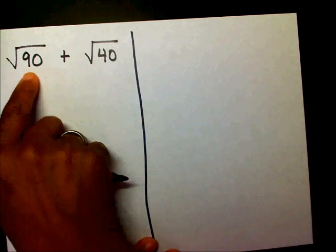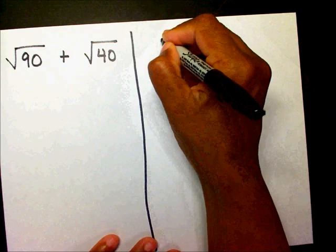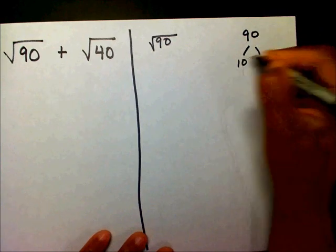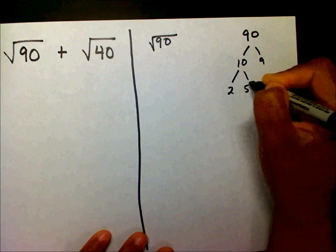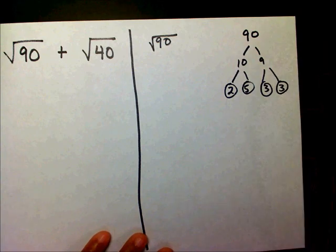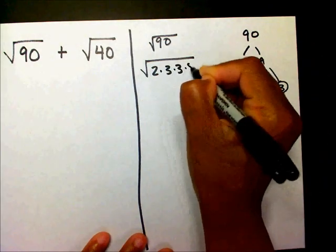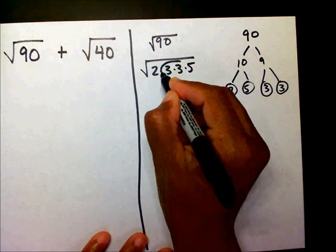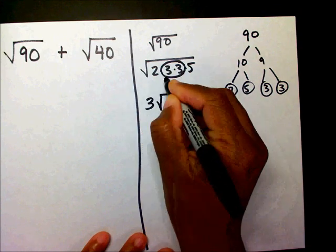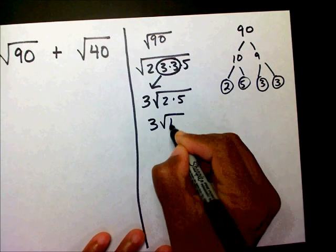We have radical 90 plus radical 40. I'm going to simplify radical 90, so I'll make a factor tree for 90: that's going to be 10 and 9, then 2 and 5 — both prime — and 3 and 3. Underneath my radical I have 2 times 3 times 3 times 5. The 3 times 3 is 9, and the square root of 9 is 3, so I put that on the outside. My 2 and my 5 stay inside, leaving me with 3 radical 10.